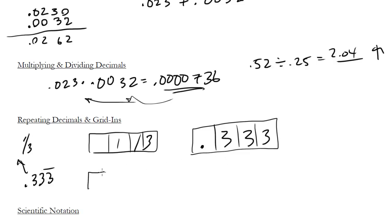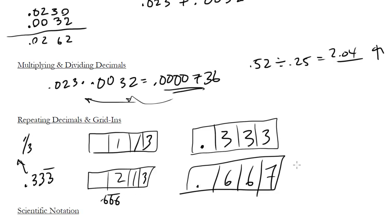If you had something like 2 thirds, this is where things get even weirder. You could grid it in as .667 for the rounding, because this is .666 repeating. Or you could grid it in even as .666, which is strange, because we're not rounding, we're truncating instead. That's why just grid in the fractions, it's much easier.